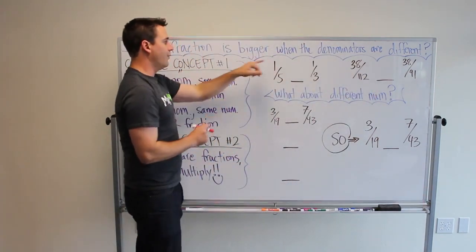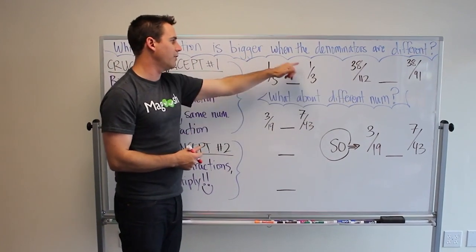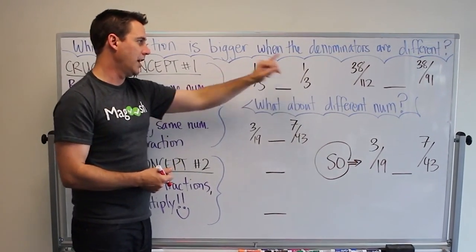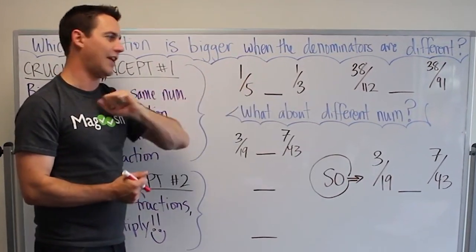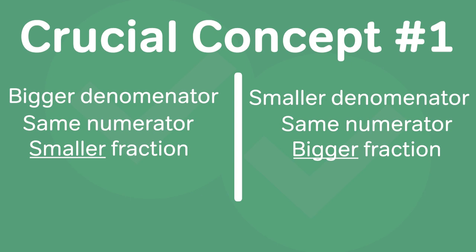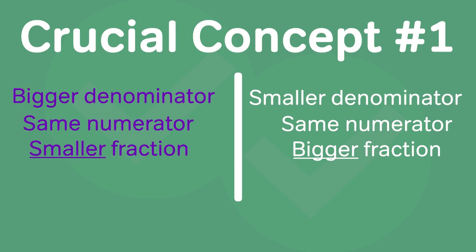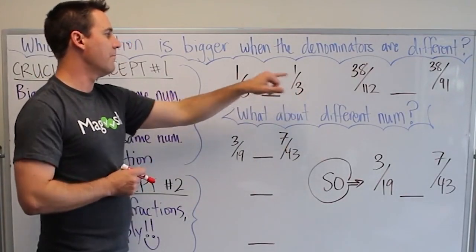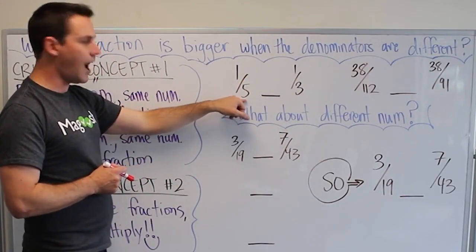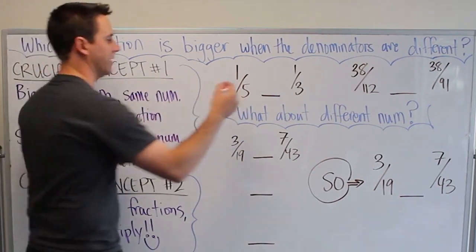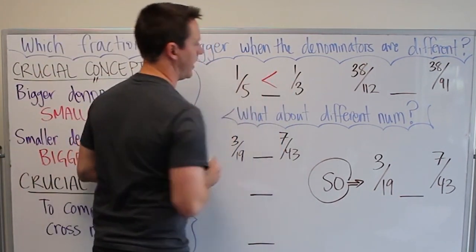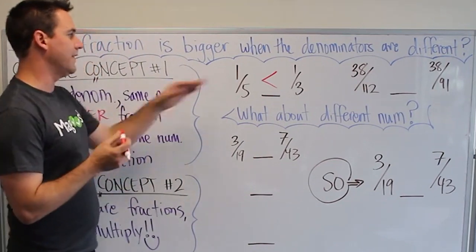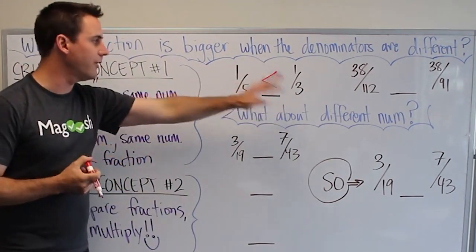So we have the same numerator here — 1/5 and 1/3, both have 1 on top. We have a 5 on the bottom and a 3 on the bottom. What does our concept say? Bigger denominator, smaller fraction. So 5 is bigger, 3 is smaller — the bigger denominator gives the smaller fraction. And so 1/5 is smaller than 1/3.